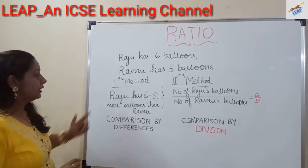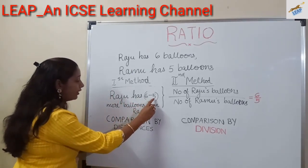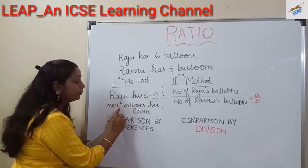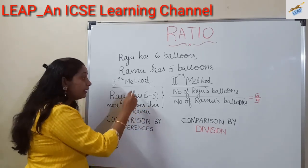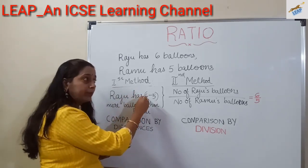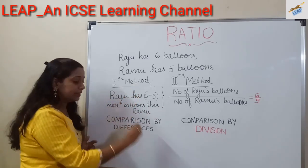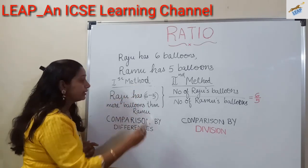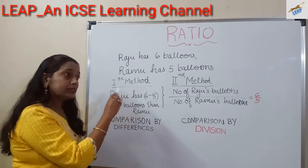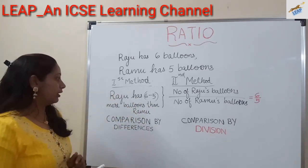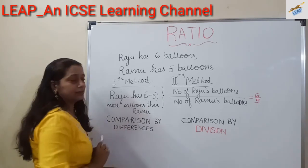First method: Riaju has 6 - 5, that is 1 more balloon than the other. Here we compare the number of balloons by finding the difference between them. This type of comparison is known as comparison by differences.